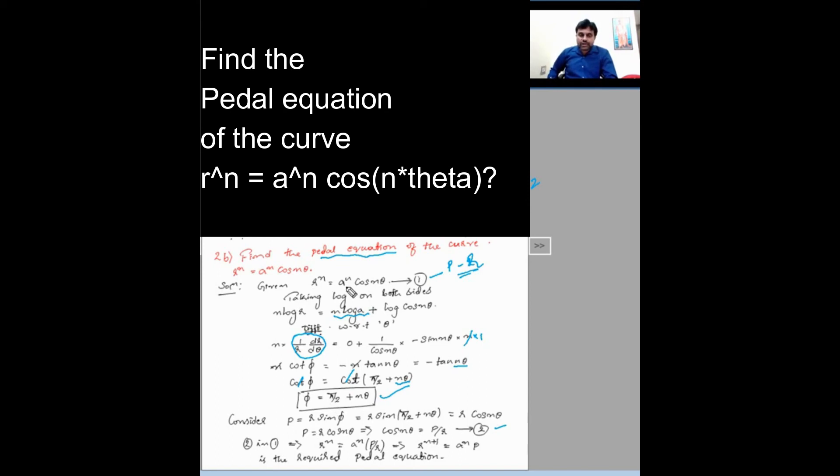Substituting 2 in 1, we get r^n = a^n cos n theta, which is P/r. Substitute that value P/r. Cross multiply r. Bases are same. r^n into r becomes r^(n+1) = a^n into P.